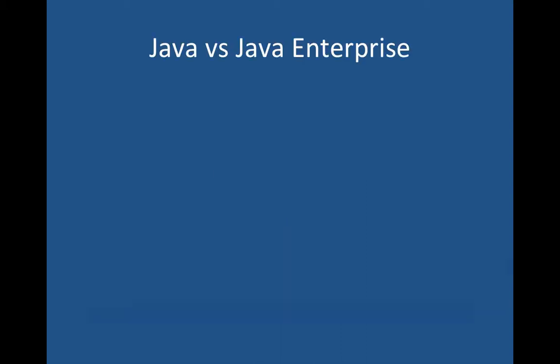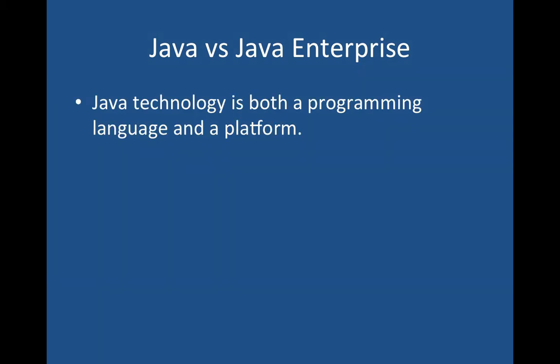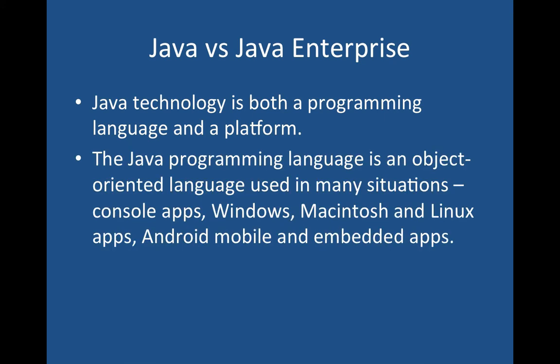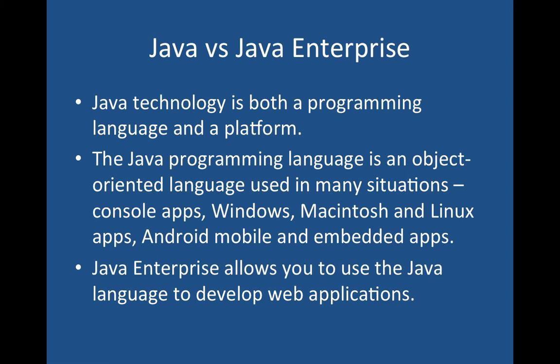First of all, there's a confusion about Java and Enterprise Java. Let's talk about them. Java is a technology — both a programming language and a platform to run websites. The Java programming language that most people learn is an object-oriented language used in many situations. You can use it for console apps, Windows applications, Macintosh, Linux, or people work on Android and embedded devices. However, Enterprise Java allows you to take the Java language and run it on a web server to run web applications.